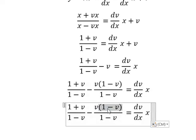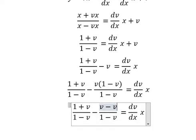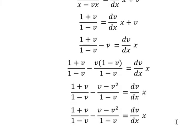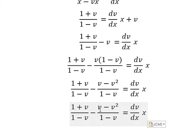So we have v minus v squared. The v minus v terms cancel. Negative with negative gives positive.